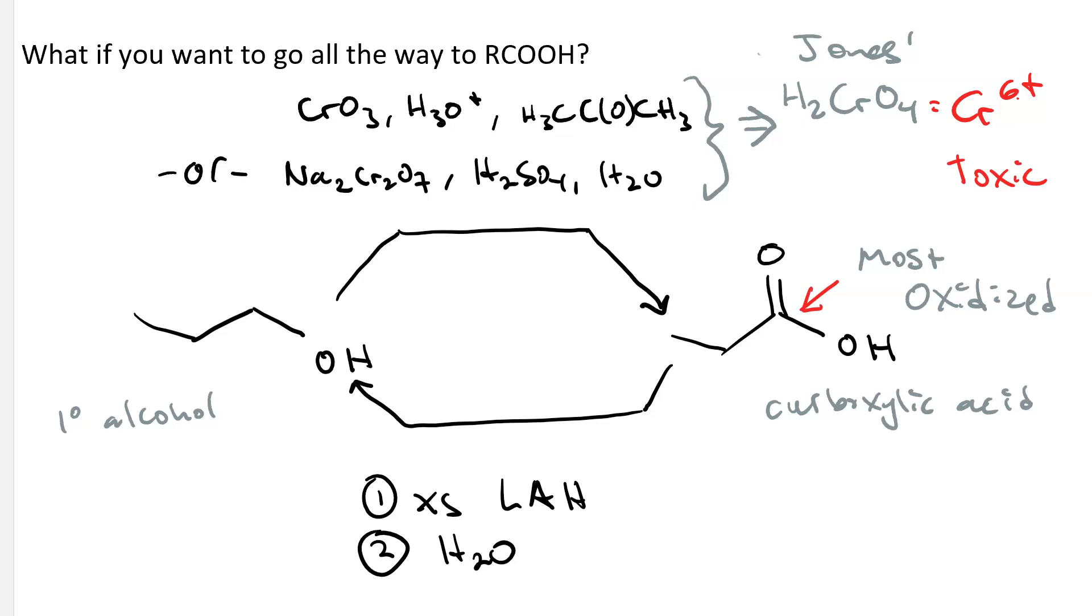There is actually an alternate route that involves making an alkyne anion and then doing hydroboration oxidation. That might be better in that you can avoid using chromium 6. However, it is a lot more steps.